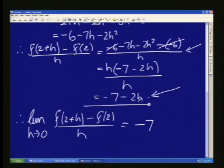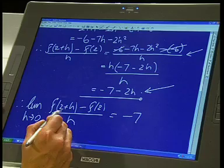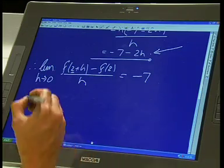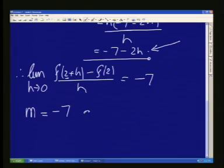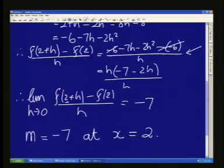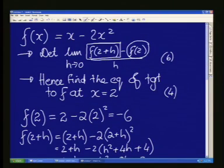Usually if you take the limit f of x plus h minus f of x over h, it gives you a gradient. Now that gradient can be anywhere on the curve. At our specific place, this gives me the gradient which is minus 7 at the point where x on this graph is 2. Now if I go back to the top, that comes to the second part of my question.